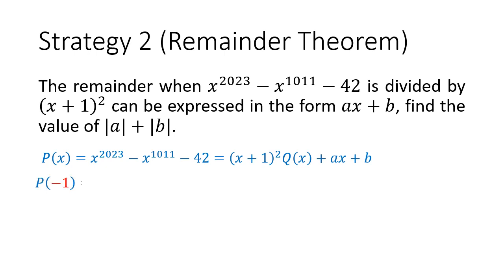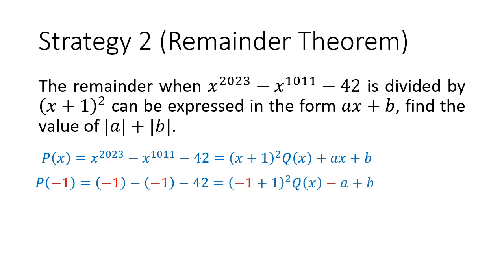So, how can we get rid of this unknown quotient? We can substitute x equals to negative 1. When we sub this in, the dividend will become negative 1 to the power of 2023, which is still negative 1, minus negative 1 to the power of 1011, which is still negative 1, minus 42. The divisor x plus 1 squared will become 0, which gets rid of the qx, and the remainder will be negative a plus b. This gives us our first equation: negative 42 equals to negative a plus b.